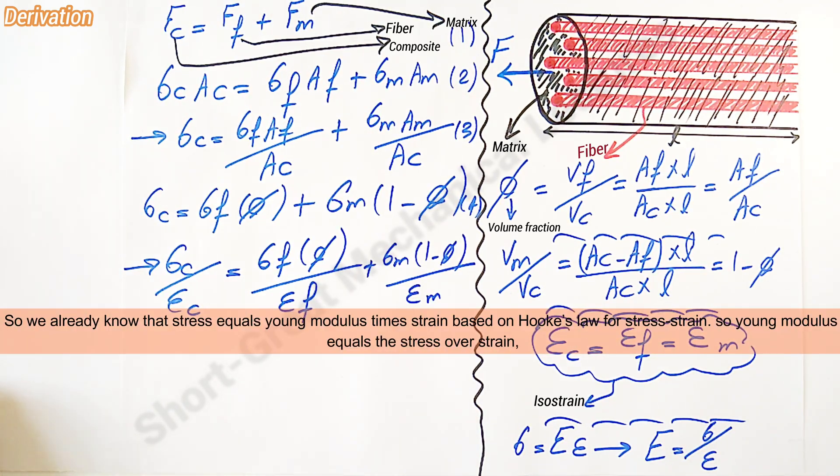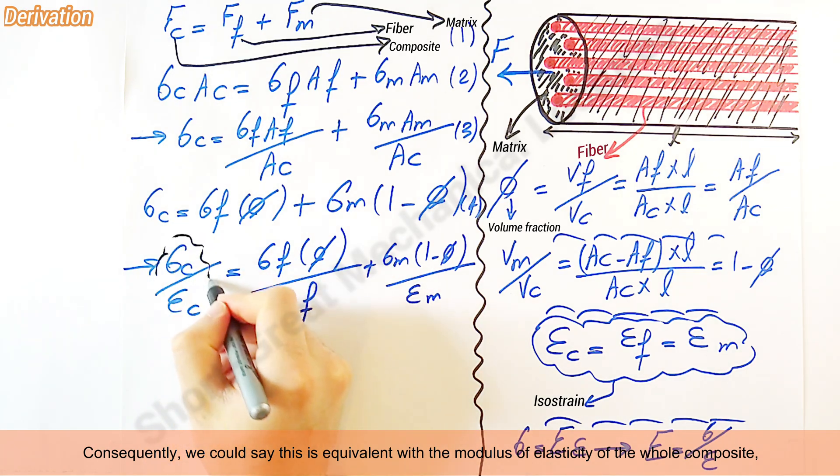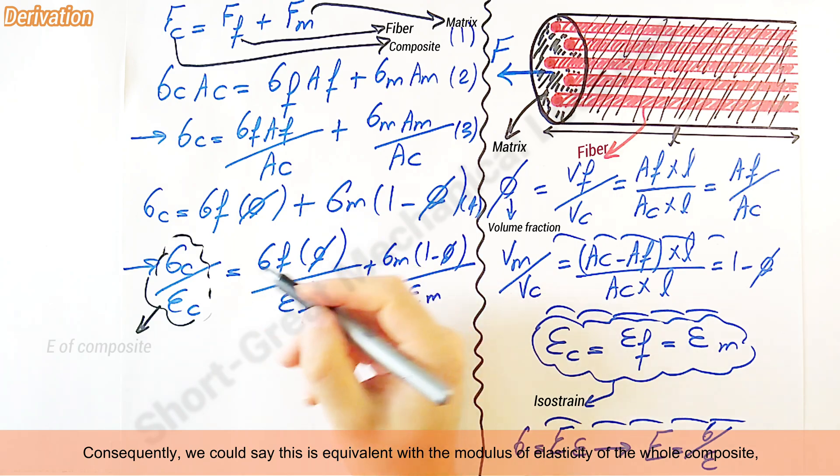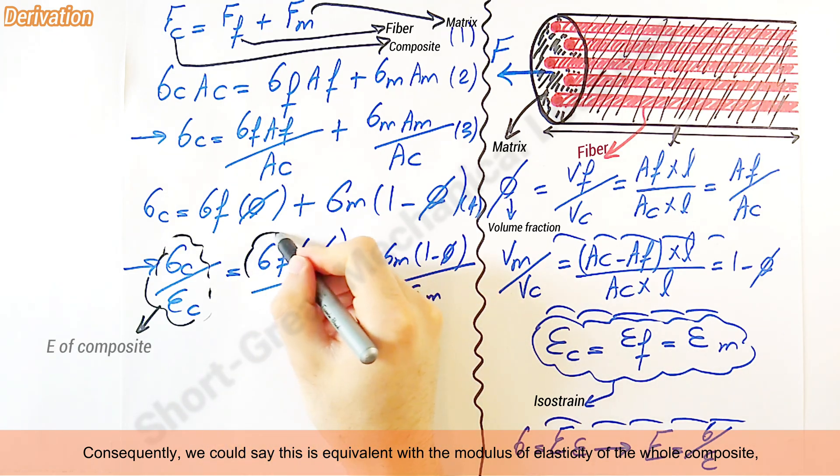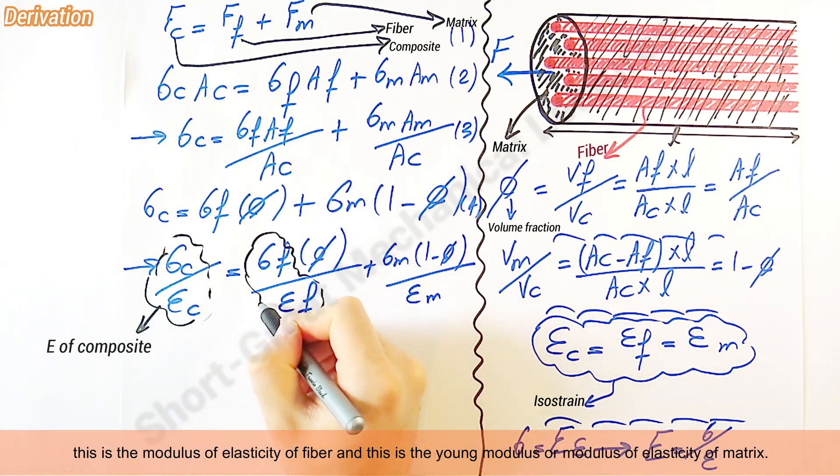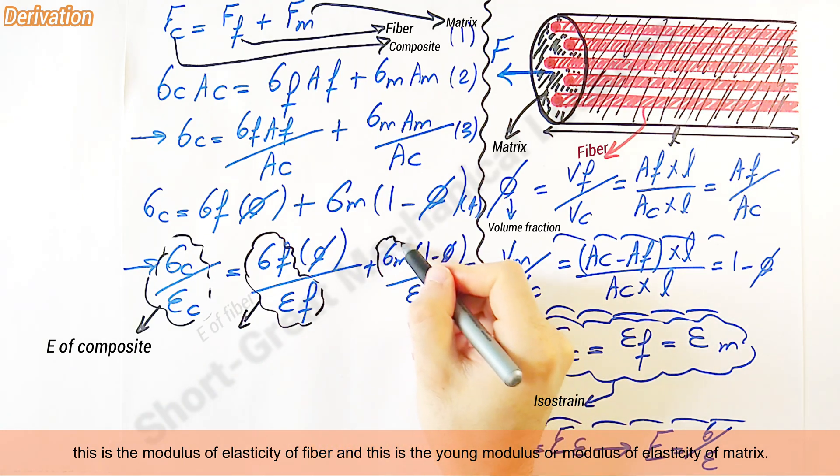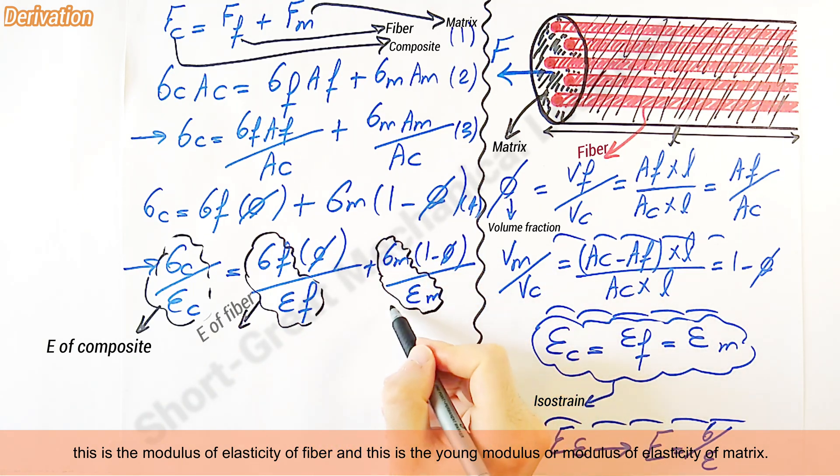We already know that stress equals Young's modulus times strain based on Hooke's law. So, Young's modulus equals the stress over strain. Consequently, this is equivalent with the modulus of elasticity of the whole composite. This is the modulus of elasticity of fiber and this is the Young's modulus of matrix.